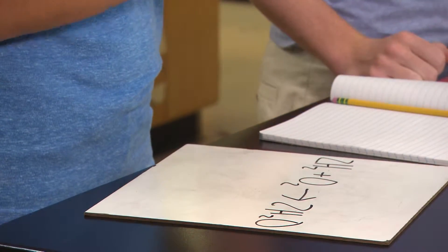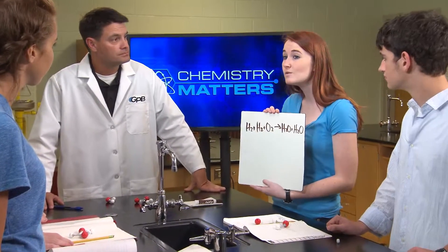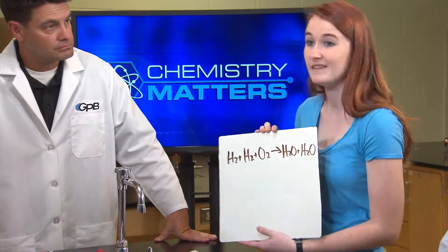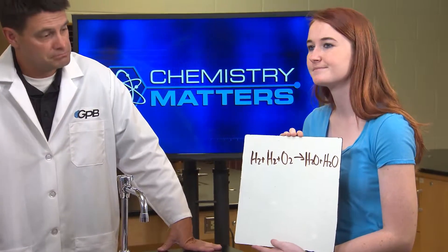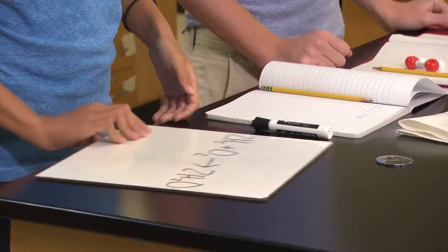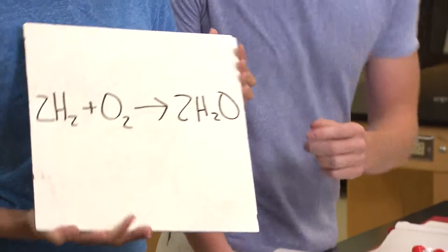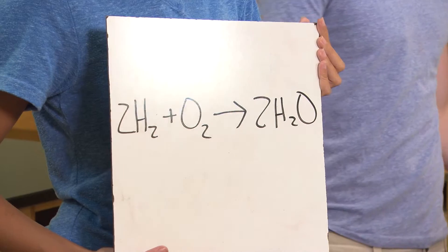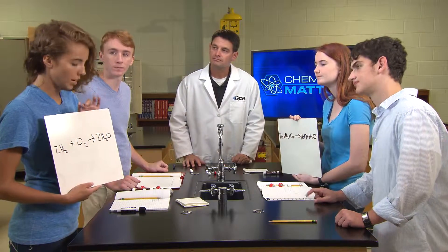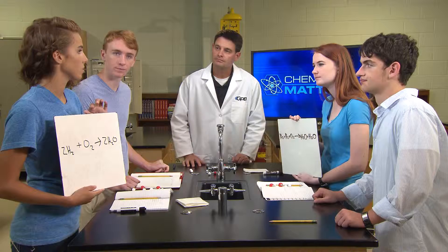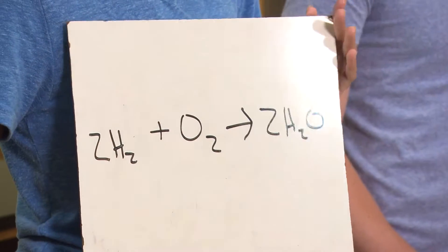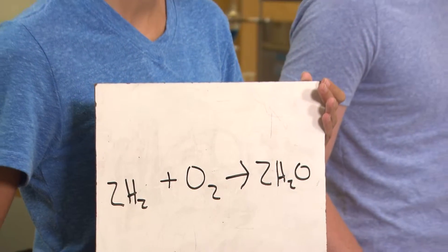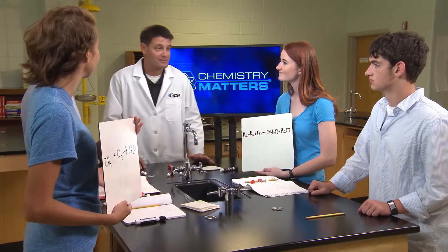Since we have two molecules of hydrogen, we wrote hydrogen twice and one oxygen molecule, with the arrow pointing to the product — two water molecules. Another approach: group like terms the way we do in math, so the equation reads two hydrogen molecules plus one oxygen molecule forms two water molecules. Both answers are correct balanced equations and both demonstrate the law of conservation of matter, since you have the same number of each element on both sides.